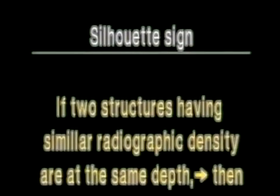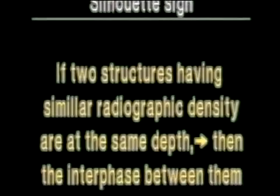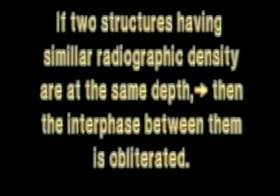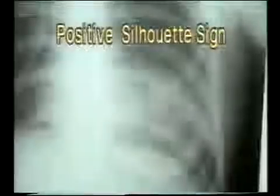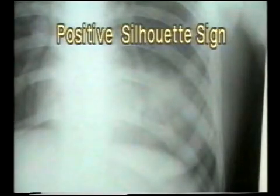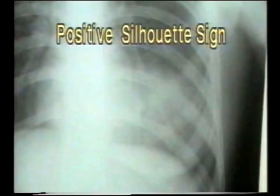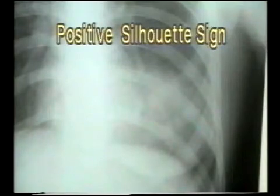One must also know about the silhouette sign to be able to identify the lobe affected. The silhouette sign states that if two structures having similar radiographic densities are in contact with each other at the same depth, then the interface between them is obliterated. But if they are at different depths, then they are seen as separate structures with their borders. In this consolidation of the left lower lobe, the lesion could be in the lingular lobe anteriorly or in the lower lobe posteriorly. The heart border is indistinguishable, i.e., silhouette sign is positive.